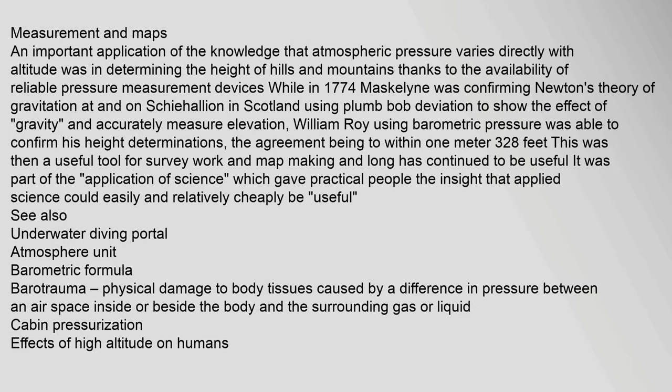An important application of the knowledge that atmospheric pressure varies directly with altitude was in determining the height of hills and mountains, thanks to the availability of reliable pressure measurement devices. While in 1774 Maskelyne was confirming Newton's theory of gravitation at Schiehallion in Scotland using plumb bob deviation, William Roy using barometric pressure was able to confirm his height determinations, the agreement being to within 1 meter. This was then a useful tool for survey work and map making.